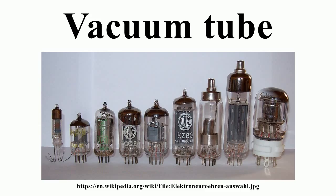Except for diodes, additional electrodes are positioned between the cathode and the plate. These electrodes are referred to as grids, as they are not solid electrodes but sparse elements through which electrons can pass on their way to the plate. The vacuum tube is then known as a triode, tetrode, pentode, etc., depending on the number of grids. A triode has three electrodes: the anode, cathode, and one grid.